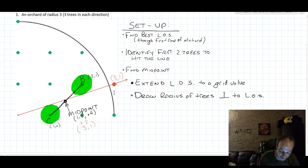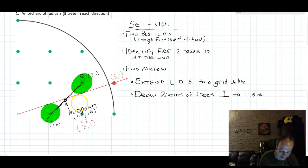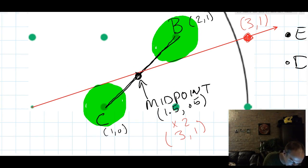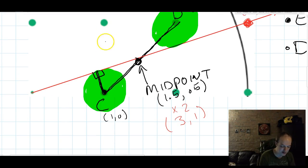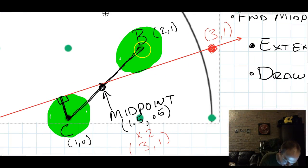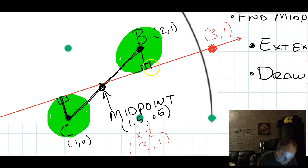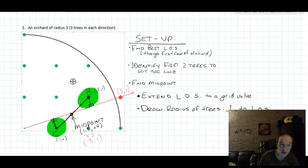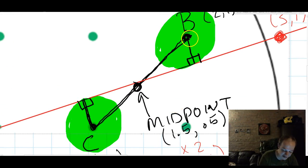I've adjusted my line of sight so that it actually goes through that point. The last step is to take your trees and draw the radius of each tree perpendicular to the line of sight. For tree C, that radius goes from the center to the line of sight and makes a right angle. Notice that radius is not straight up and down, nor straight across — it goes at a diagonal because it's perpendicular to the line. Same with tree B. I'm going to call that radius x.